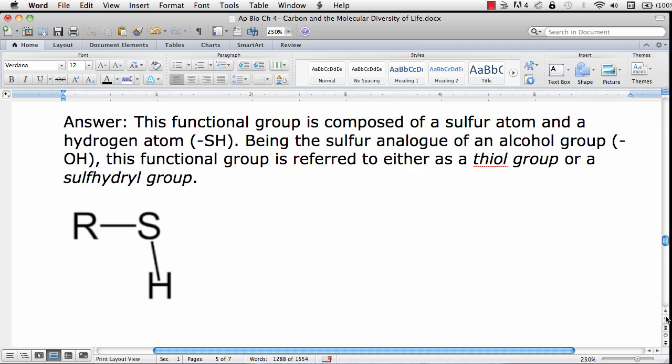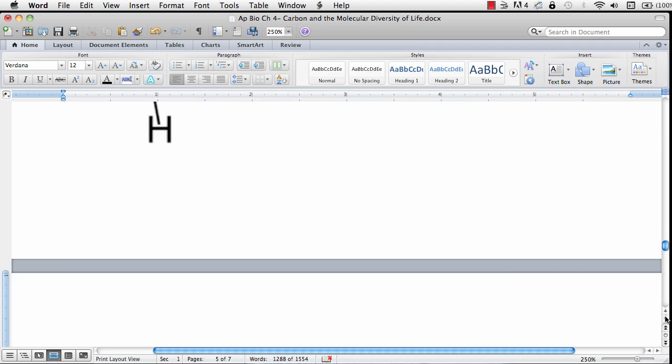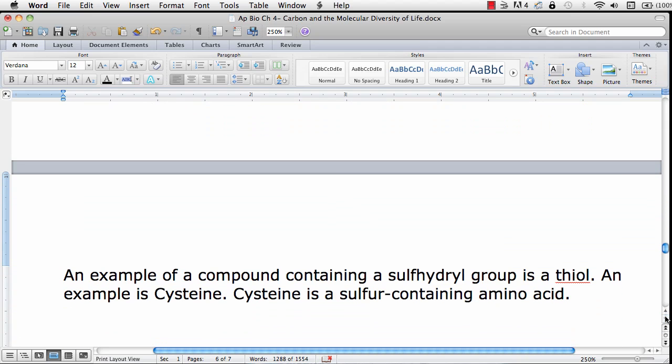An example of a compound containing a sulfhydryl group is the amino acid cysteine. Cysteine is a thiol, a sulfur-containing amino acid.